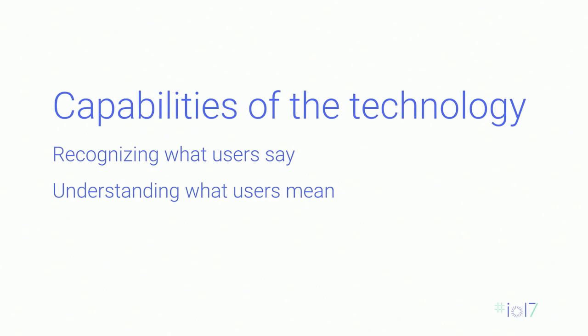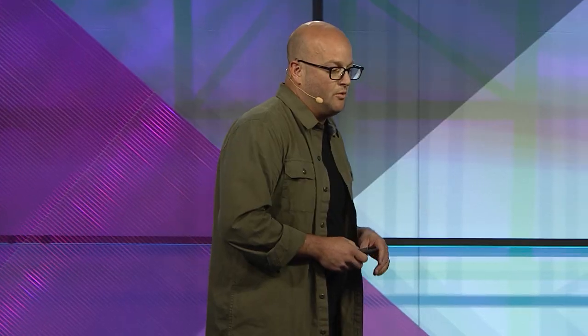The other thing to consider is the capabilities of the technology. Recognizing the words people say is much different than understanding what they mean. With respect to recognition, Google already had a low word error rate, but after applying deep learning we slashed it again significantly — now down to something like 4.9%. That's an absolutely amazing result. So recognition is more or less a solved problem. But language understanding is a more difficult nut to crack.